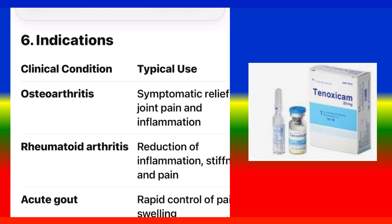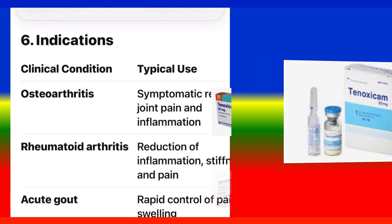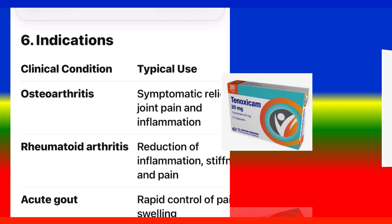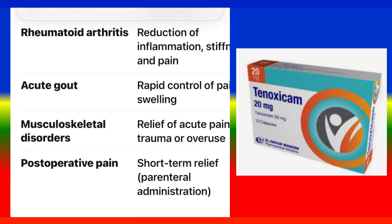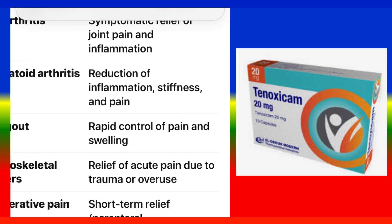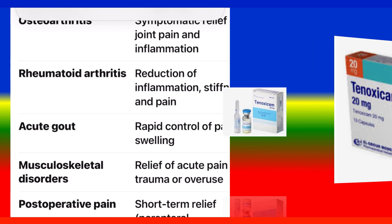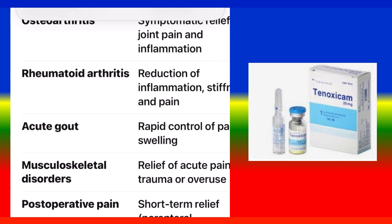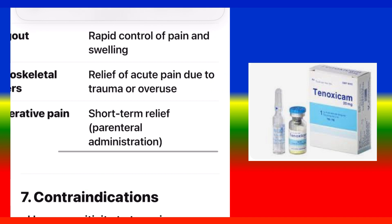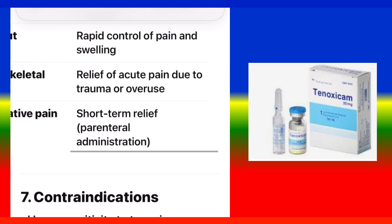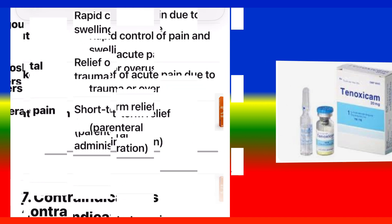Indications by clinical condition: Osteoarthritis — symptomatic relief of joint pain and inflammation. Rheumatoid arthritis — reduction of inflammation, stiffness, and pain. Acute gout — rapid control of pain and swelling. Musculoskeletal disorders — relief of acute pain due to trauma or overuse. Post-operative pain — short-term relief via parenteral administration.